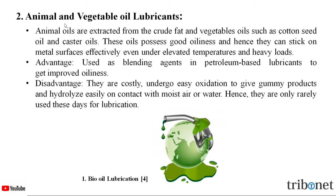The first one is animal and vegetable oil lubricants. Animal oils are extracted from the crude fat, and vegetable oils such as cottonseed oil and castor oil. These oils possess good oiliness and hence they can stick on metal surfaces effectively even under elevated temperatures and heavy loads.